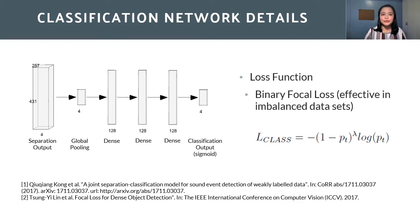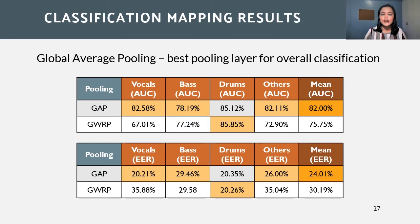For the classification network, the equal error rate and the area under the curve are used as evaluation metrics. For AUC, the higher the values the better, and for EER, the lower the values the better. As shown in this table, the AUC and EER metrics are consistent for all sound sources. Only the drum source improved in changing the global pooling layer to global weighted rank pooling. Between the two classification mappings, the global average pooling has the best average metrics.